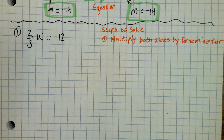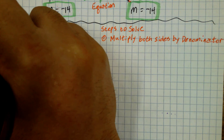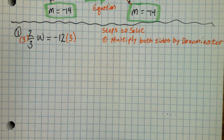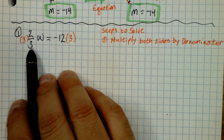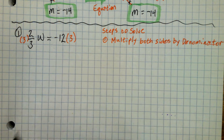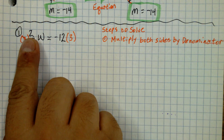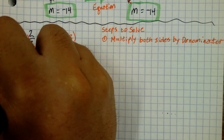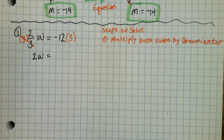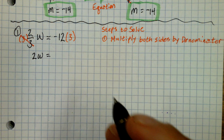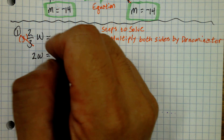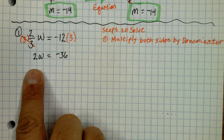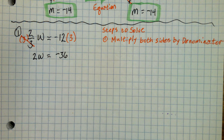Let's do that. My denominator is 3, so let's multiply both sides by 3. Let's see what happens. I have a 3 here and a 3 there — they cancel. But notice we don't have a 1, so it's not 1 times W. This time it's 2 times W, so I'm going to write that down: 2W. And on the other side, we're going to multiply negative 12 times 3, which is negative 36. Now we have 2W equals negative 36.